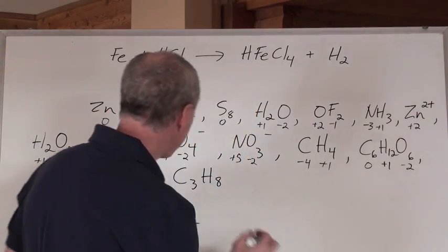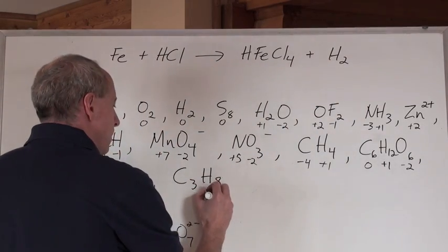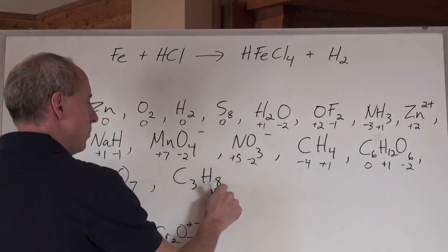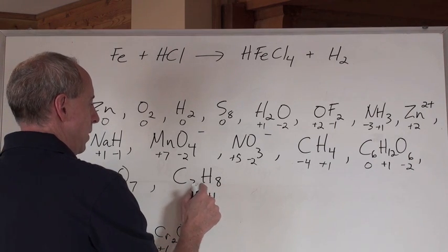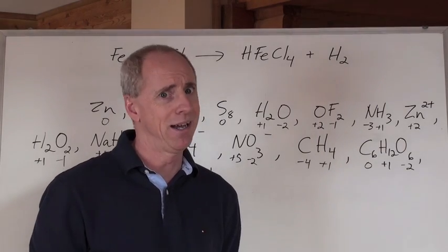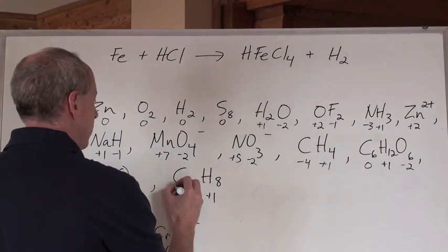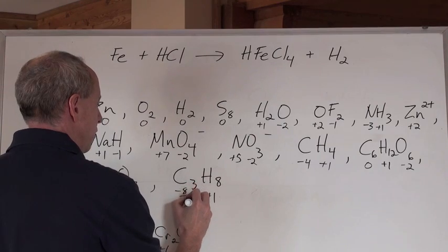Okay, now, what about the C3H8? Last one. Plus one. Plus one times eight is eight, but that's going to be zero. It's negative eight-thirds.